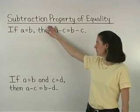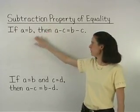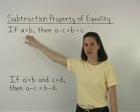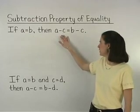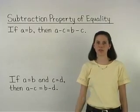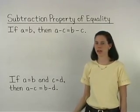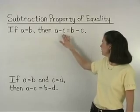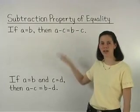The subtraction property of equality states that if A equals B, then A minus C equals B minus C. In other words, we can always subtract the same quantity from both sides of an equation.